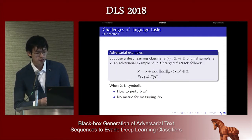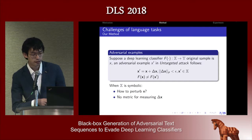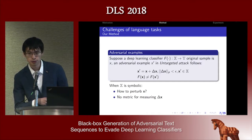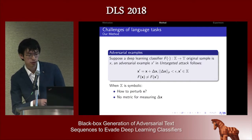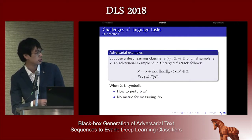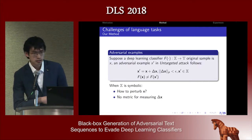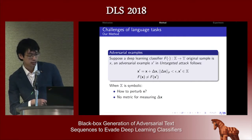Our definition of adversarial sample: originally there's a classifier from input space X to output space Y. The original sample is x, and the adversarial example x-prime equals x plus a perturbation delta-x, where the p-norm of delta-x is smaller than some constant epsilon, and x-prime should still be a valid input in input space X. Most importantly, the prediction f(x) is different from f(x-prime). But this is in the continuous space, as in the traditional image case. When we move to the text case, it's a symbolic space.